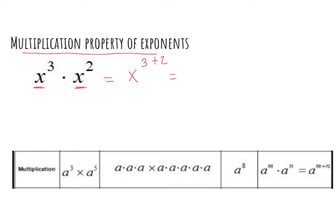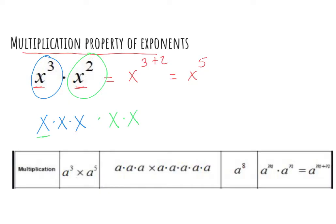So 3 plus 2 would give me 5. Why does this work? Well, x to the third power literally means take your x and multiply it by itself 3 times. x to the second power means take your base or x and multiply it by itself 2 times. If you were to count how many x's, we have 1, 2, 3, 4, 5, which is the same thing as x to the fifth power.